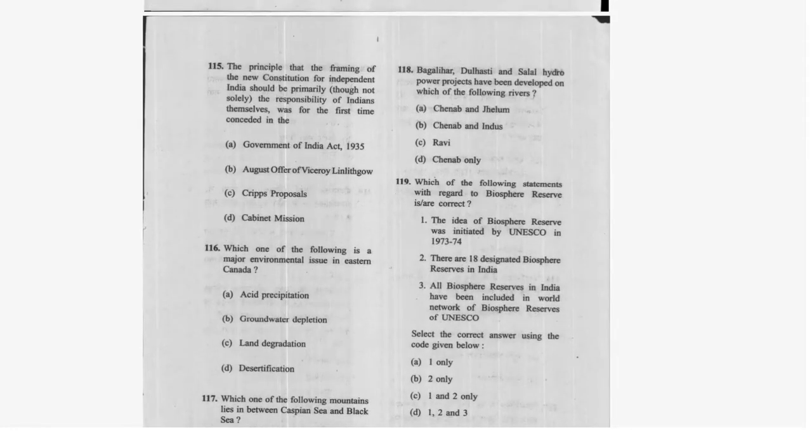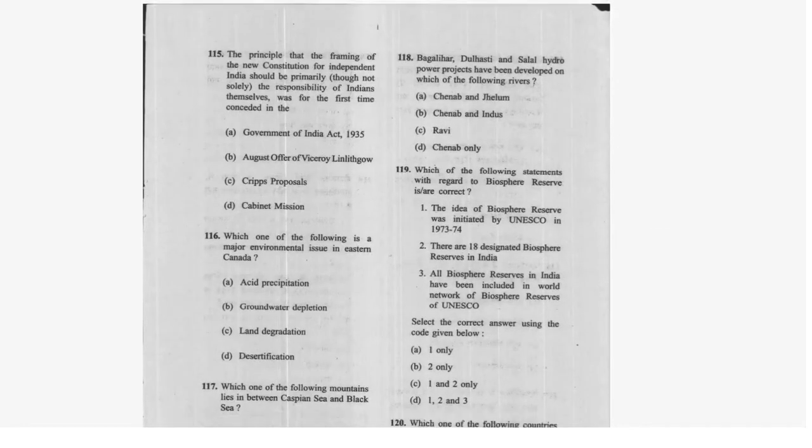Question 108: Which mountain range lies between the Caspian Sea and the Black Sea? Option A — the Caucasus — is correct. Question 109: The Baglihar, Dul Hasti, and Salal Hydro Power Projects are on which river? Option D is correct.